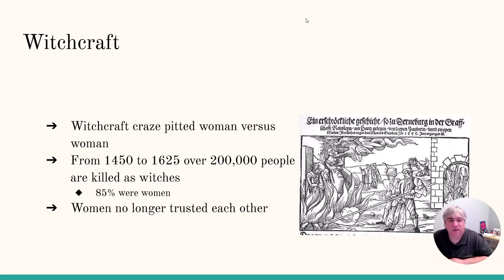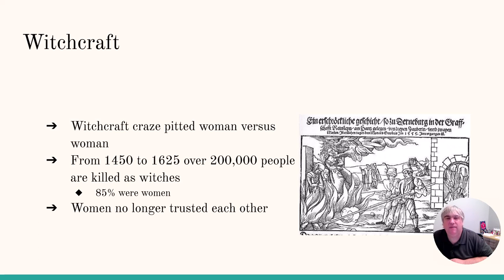Witchcraft. From year 1400 to about 1625, there are somewhere between 200,000 and 250,000 people killed as witches, of which 85% of them were women. This witchcraft craze was a way that women could keep other women down or assert their dominance. If you're familiar with US history, you may have heard of the Salem witch trials in the American colonies — that was part of this witchcraft phase, but it's the last major witchcraft-accusing outbreak in history.